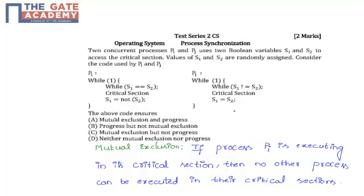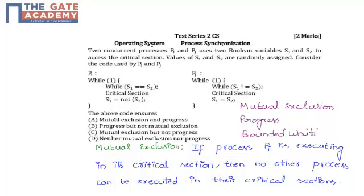There are three solutions for the critical section problem: mutual exclusion, progress, and bounded waiting. We have to find whether these two properties are present in processes PI and PJ. First, before solving this problem, we need to understand what is meant by mutual exclusion and what is meant by progress.